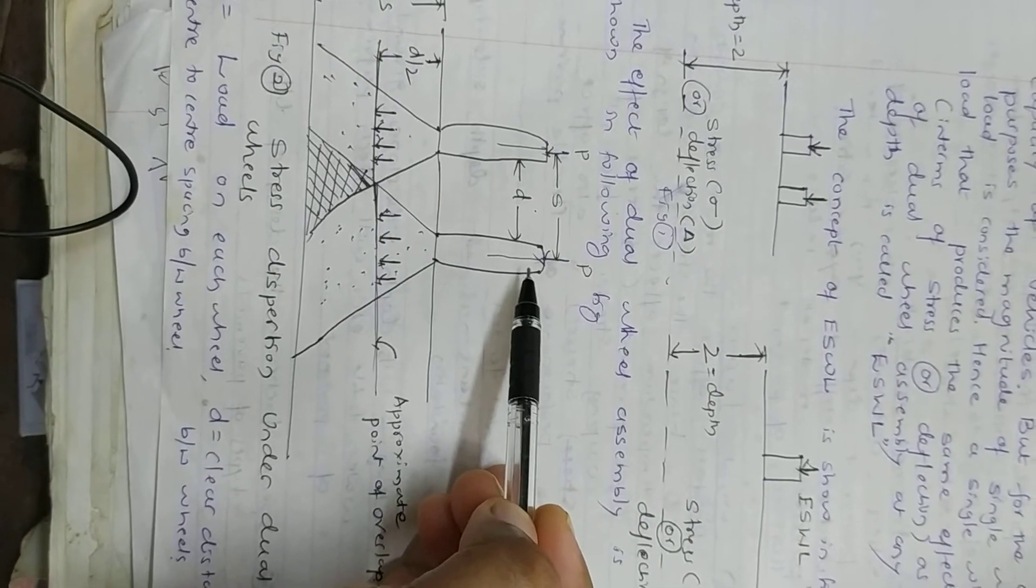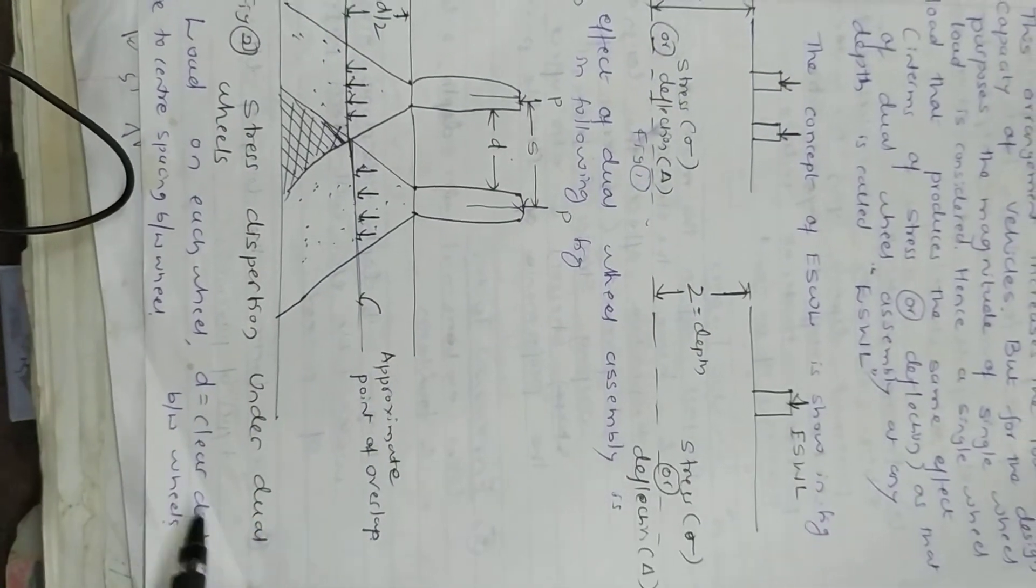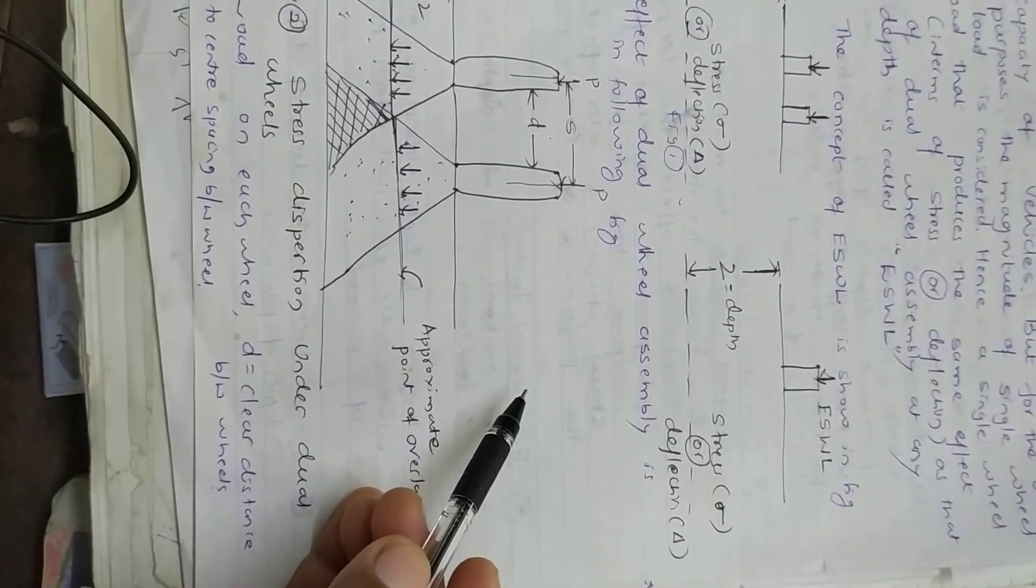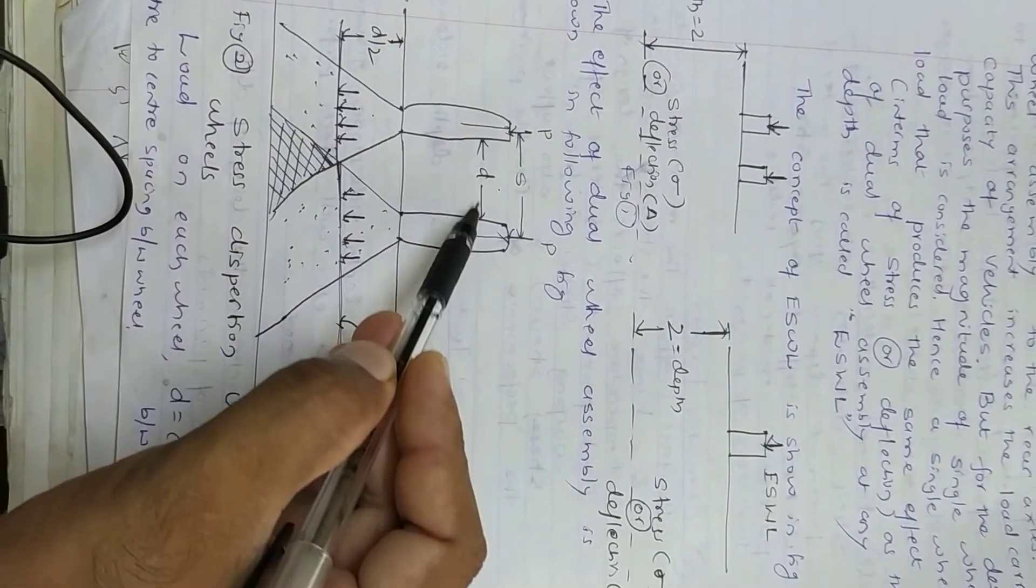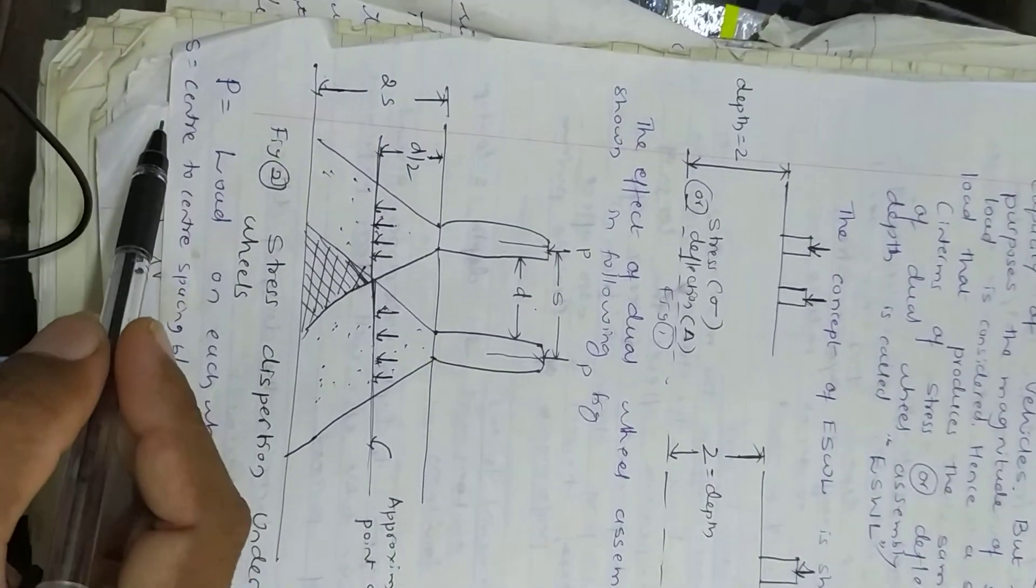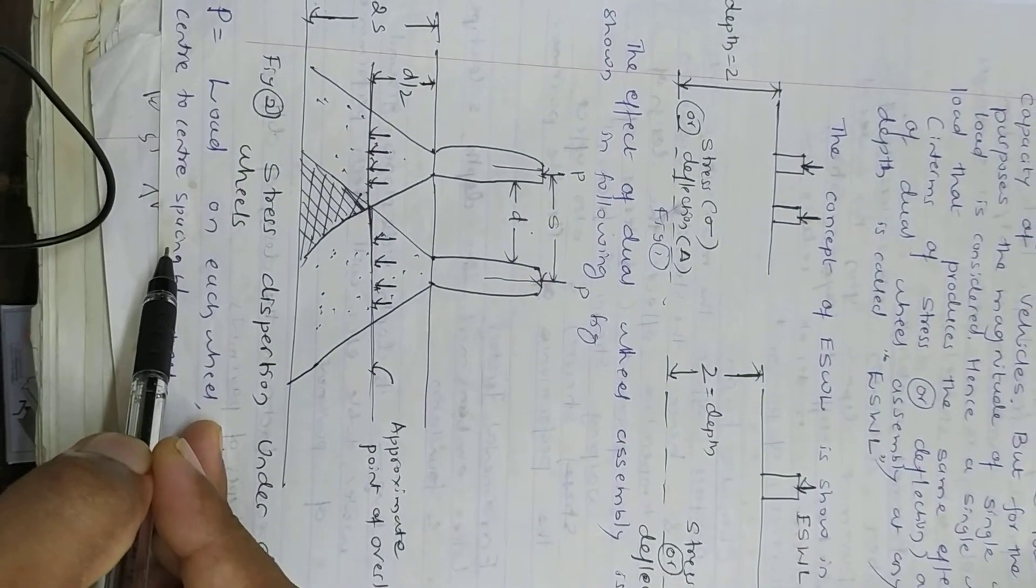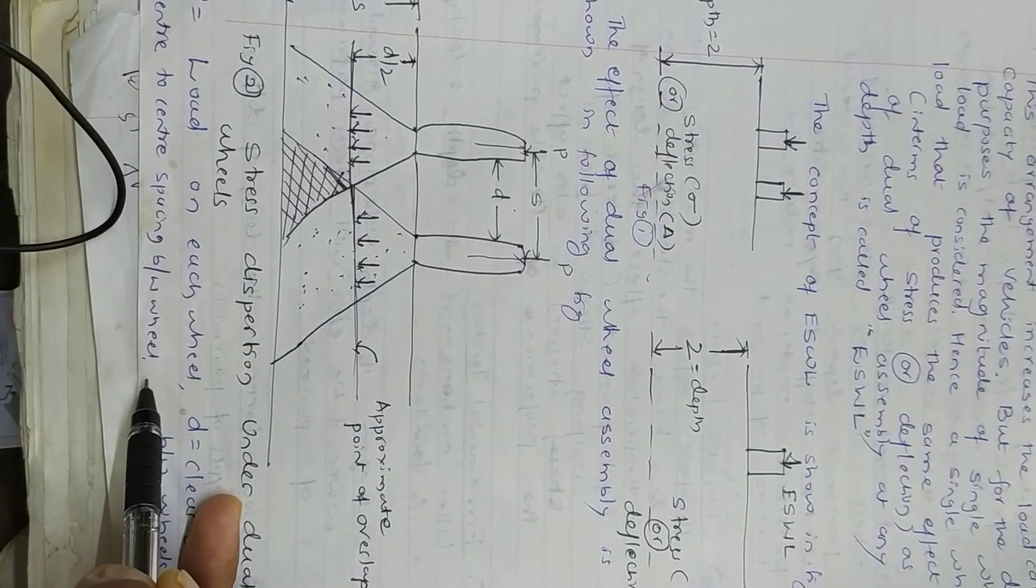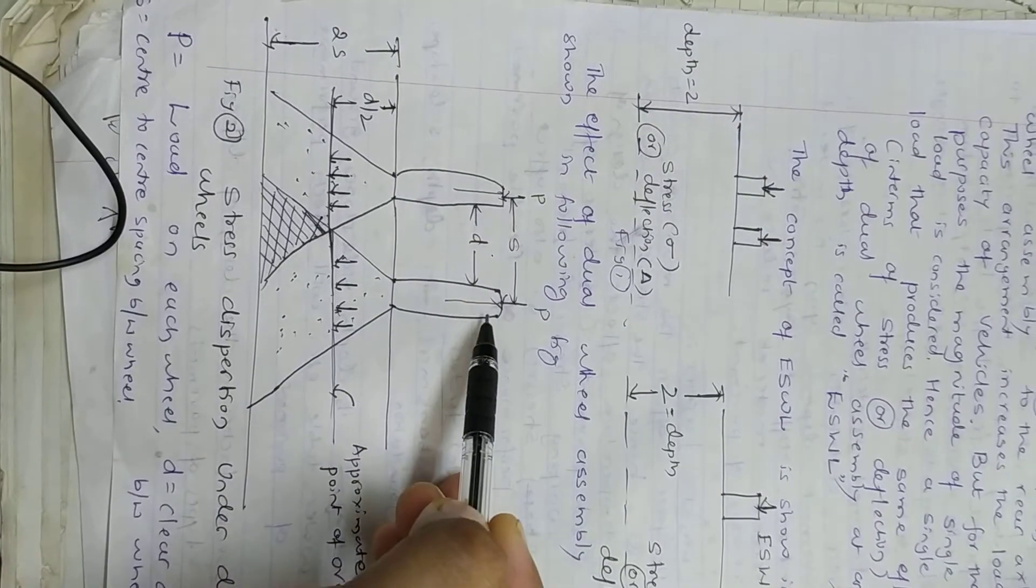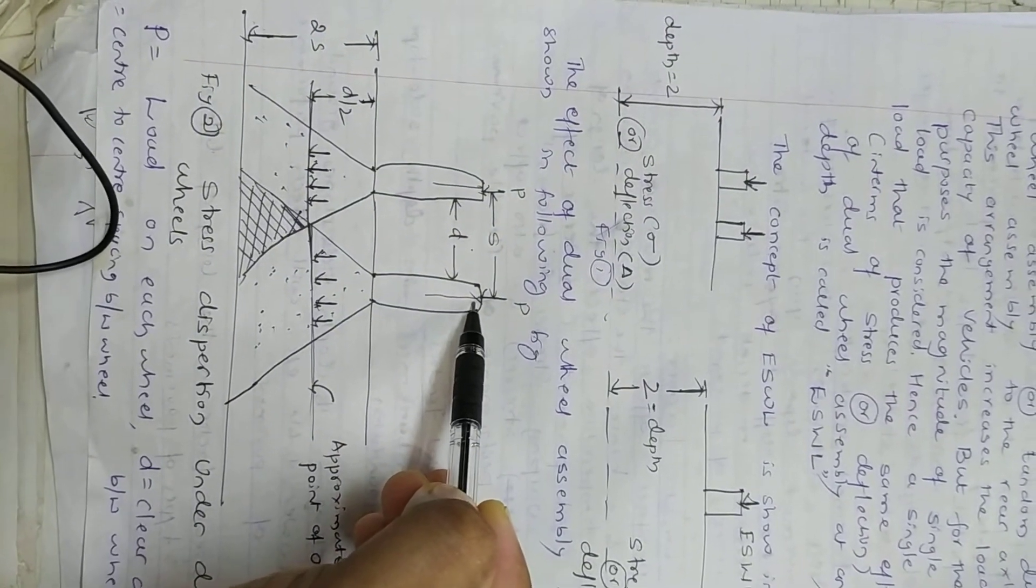d is the clear distance between the wheels - this small d is the clear distance between two wheels. And s is the center-to-center spacing between the wheels - this is s, the center-to-center distance between the two wheels.